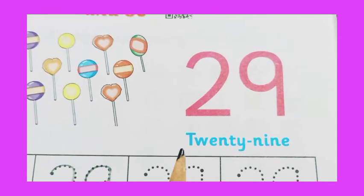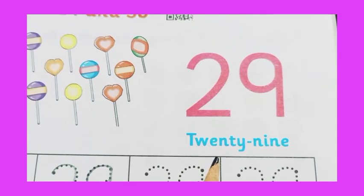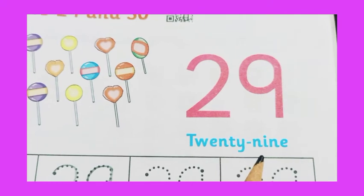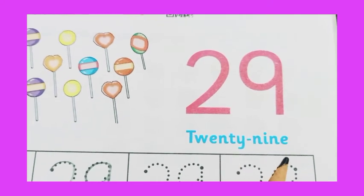Now 29 spelling is T-W-E-N-T-Y, twenty, N-I-N-E, nine. Twenty-nine.